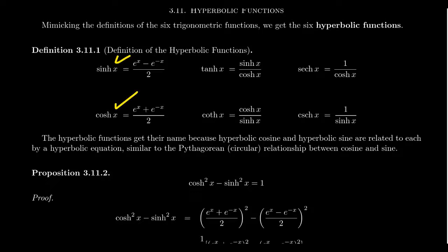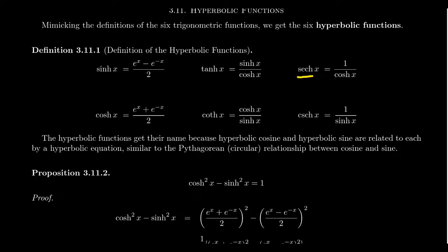We're going to define the four other hyperbolic functions by analogous relationships like we saw with circular trigonometry. Hyperbolic tangent is defined to be sinch divided by cosh — that is, sine divided by cosine in the hyperbolic sense. Hyperbolic cotangent is the reciprocal of hyperbolic tangent, which is cosh divided by sinch. Hyperbolic secant is the reciprocal of cosh. And hyperbolic cosecant is the reciprocal of sinch. So you get the six hyperbolic functions.